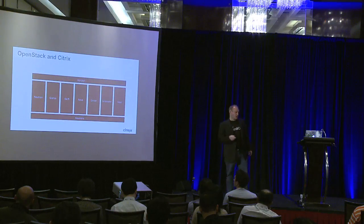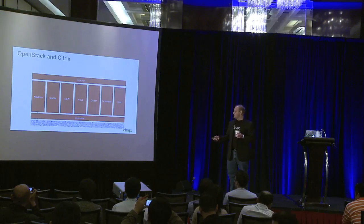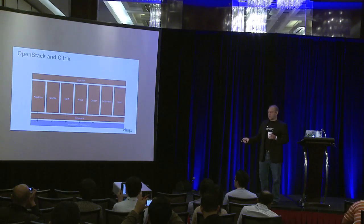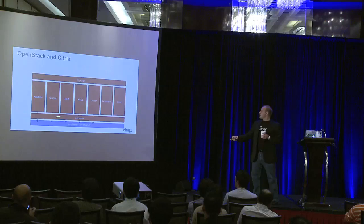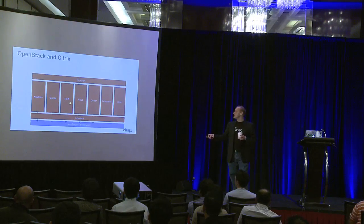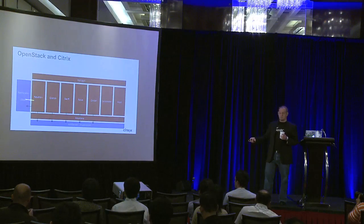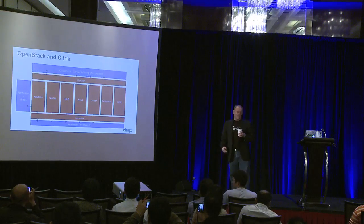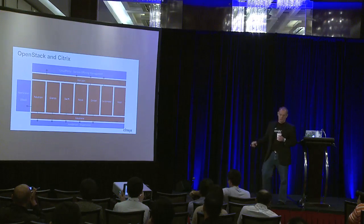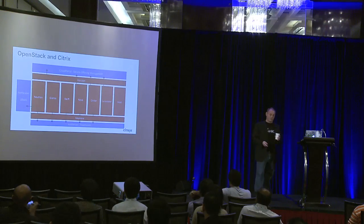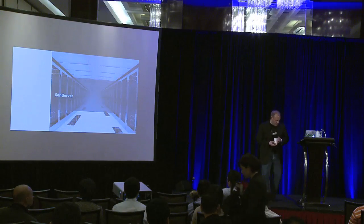These are all of the projects currently official in OpenStack. Taking the products I mentioned: ZenServer Hypervisor plugs into Cinder, Nova, Swift, Glance, and Neutron. NetScaler load balancing as a service plugs into Neutron. And then Cloud Portal sits on top, plugging into Horizon, Nova, Cinder, and Ceilometer today, with Heat coming in the near future.